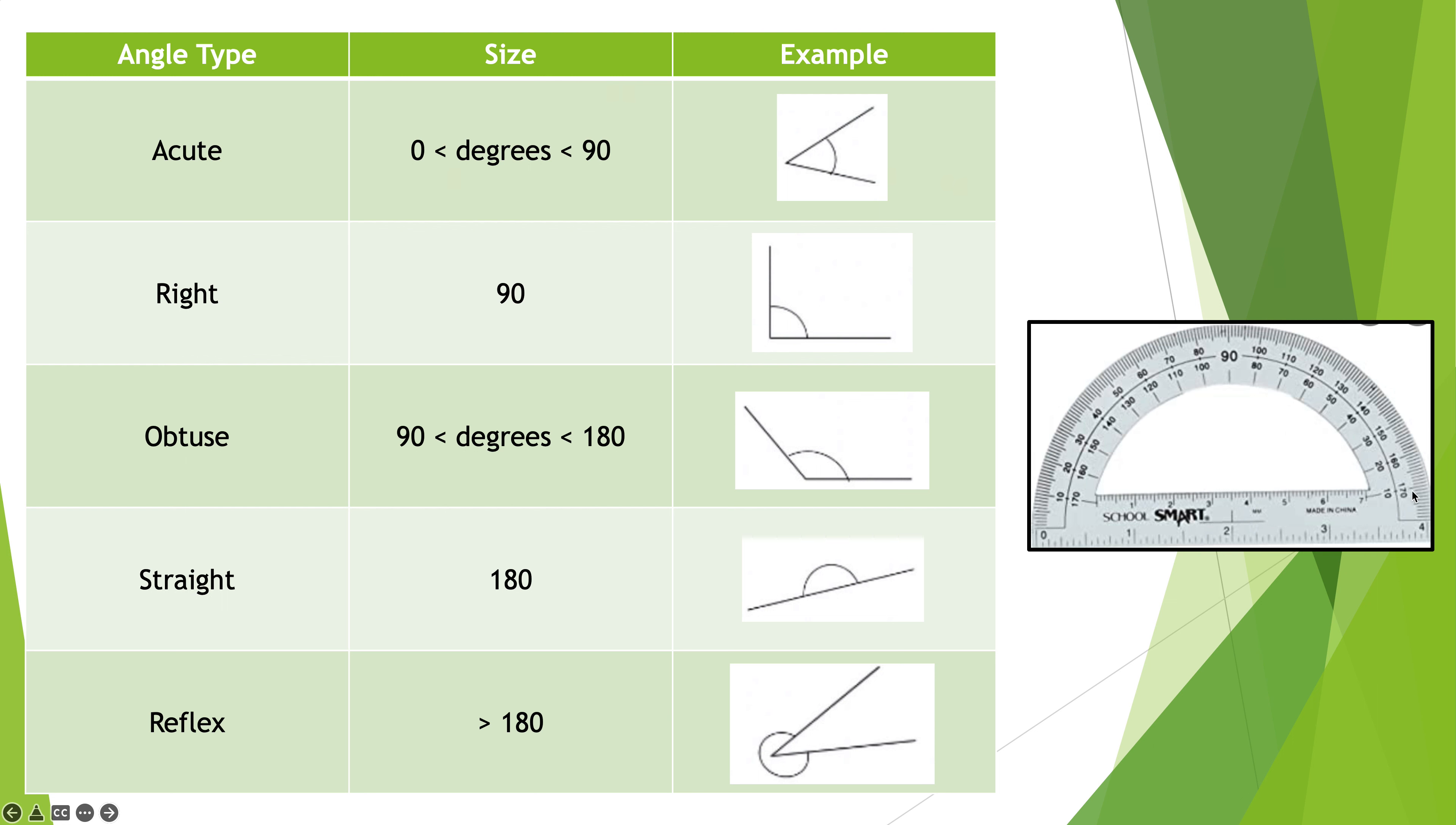If you look at the protractor here, zero degrees starts down here and anything that goes up—10, 20, 30, 40, 50, all the way up to 90. So anything that starts over here and ends up in here, that's all acute.